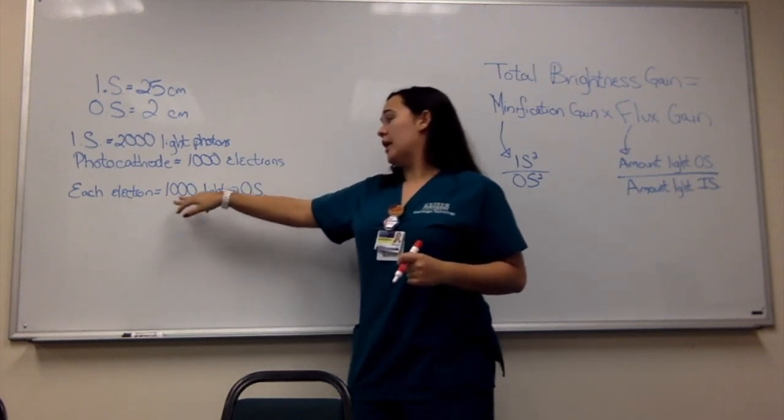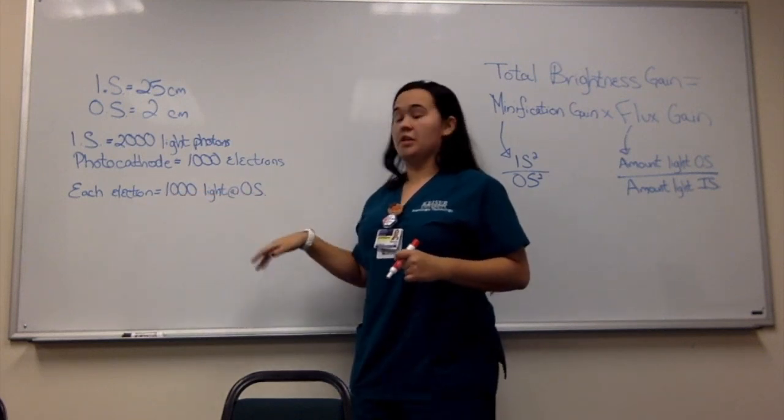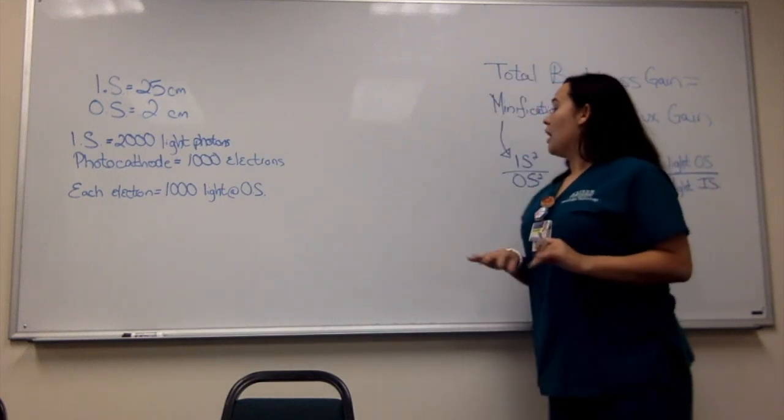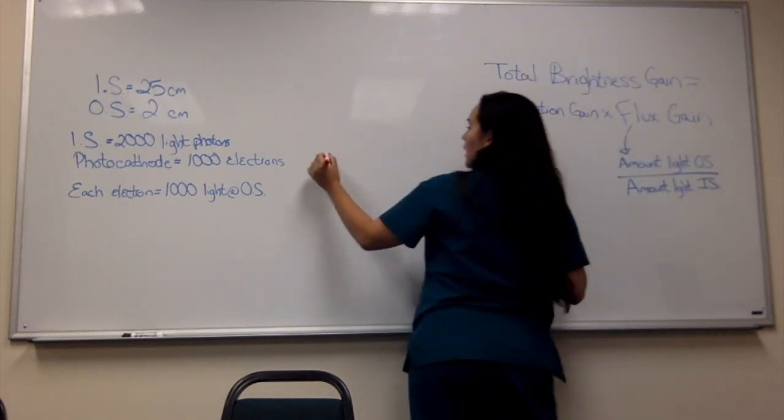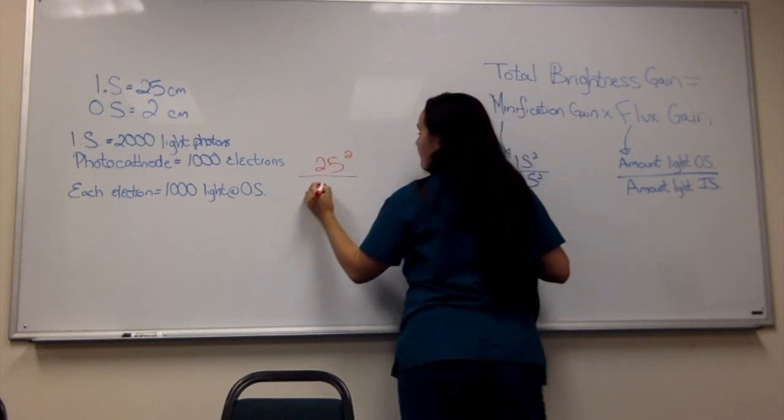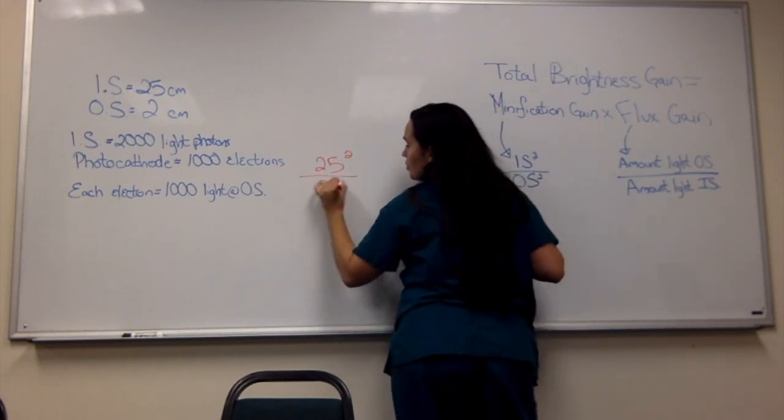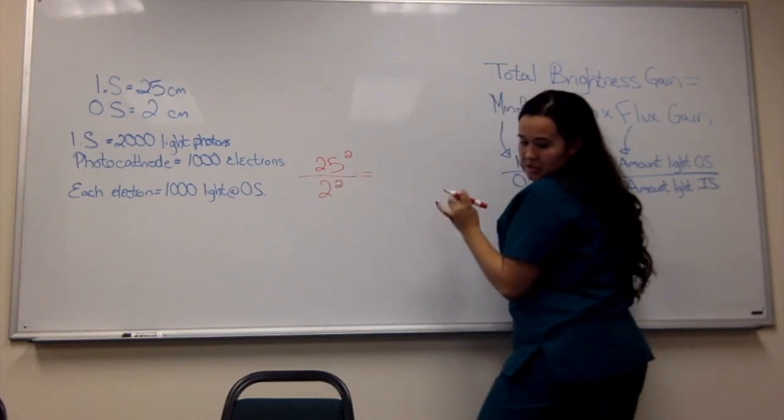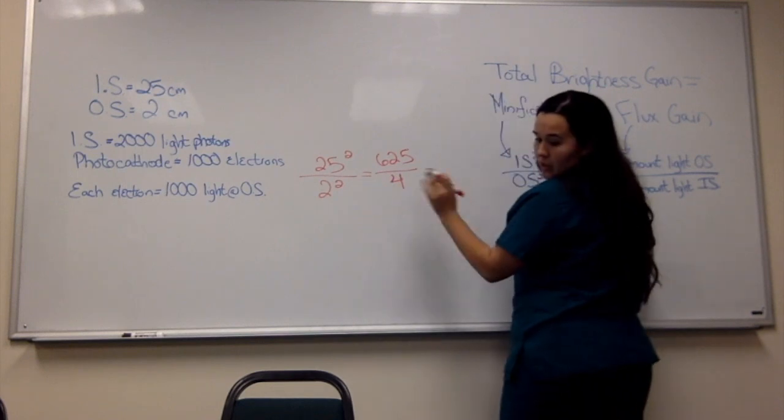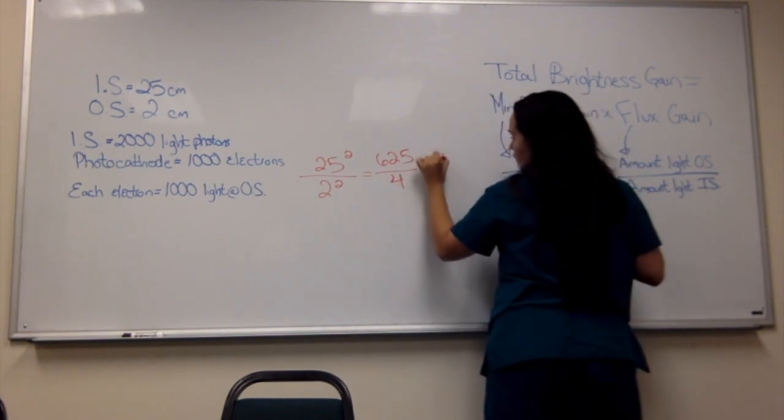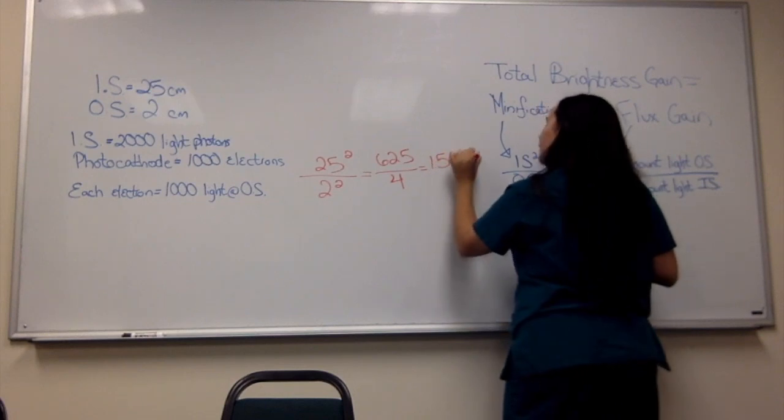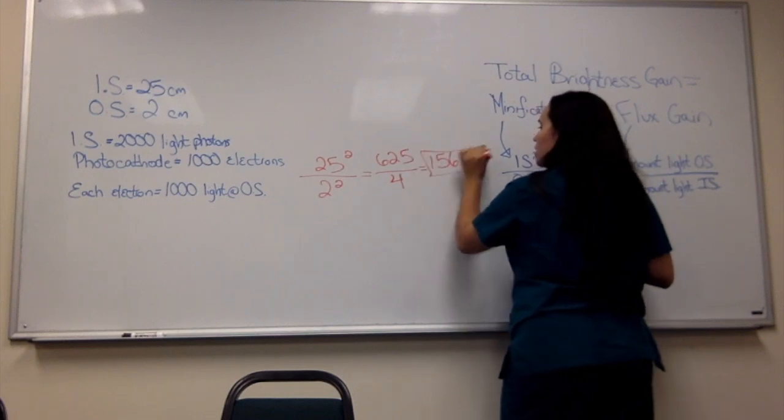So in order to find the minification gain, I'm going to take the input screen size, which is 25 squared, divided by 2 squared. So this is going to give me 625 divided by 4. When I do the math, it's going to give me 156.25. So this is the minification gain.